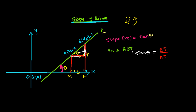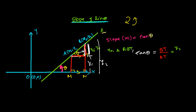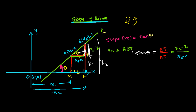Now, what is the value of BT? From B to the x-axis, the total length is y2, and from T up to that point the value is y1. So this particular distance BT equals y2 minus y1. And what is the value of AT? This distance from the origin to one point is x1, and to the other point is x2. So this particular distance AT is going to be x2 minus x1. Therefore, tan(theta) equals (y2 minus y1) divided by (x2 minus x1).